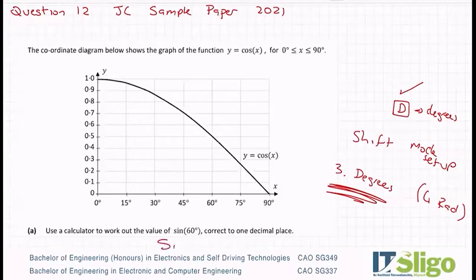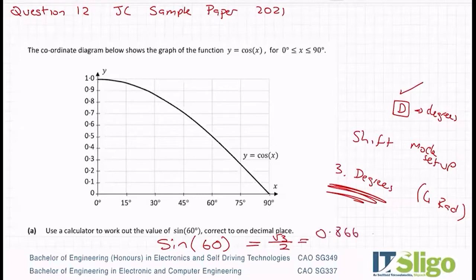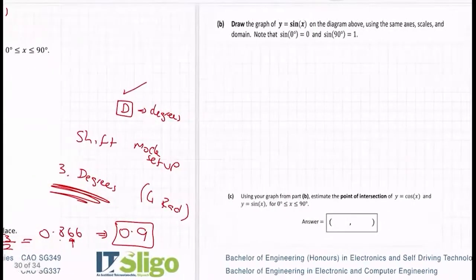Then just hit the sine button — you'll see it gives you the open bracket. Put in 60, close your bracket, hit equals. You'll get root 3 over 2, and if you convert to decimal you get 0.866. Rounded to one decimal place, I need to look at the second digit — that's greater than 5, so this one rounds up. So 0.9 is the value for sine 60.